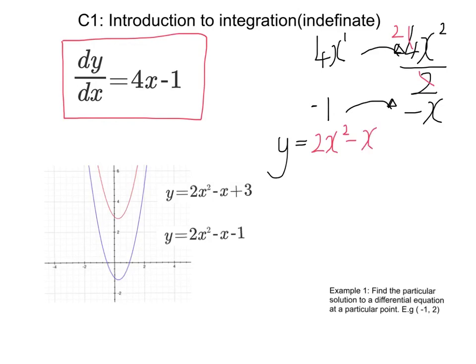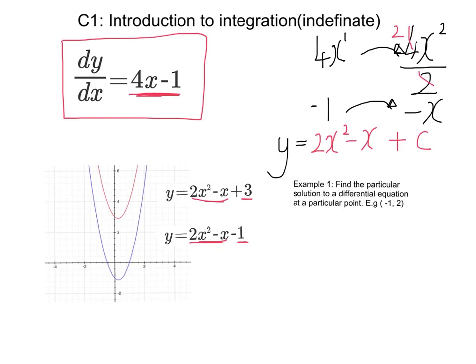Now, you can see, actually, over here, that many functions might get a gradient function of 4x minus 1, because this would differentiate to 4x minus 1, and so would this, because both their constant terms would disappear. So how do I know what the constant term here was? So the kind of question you might get is something like this. Find the particular solution to a differential equation at a particular point.